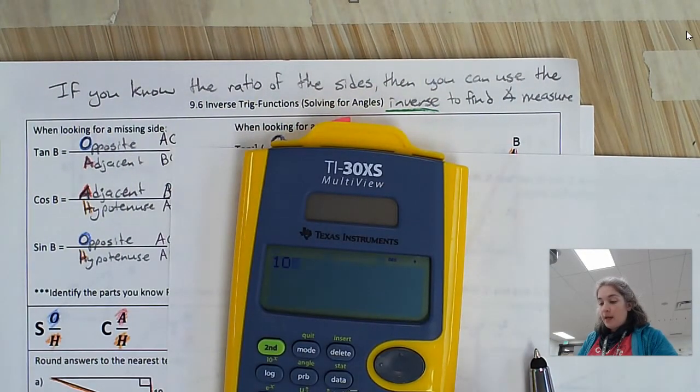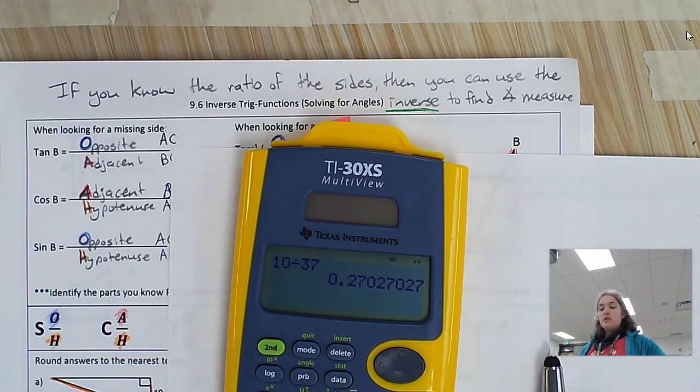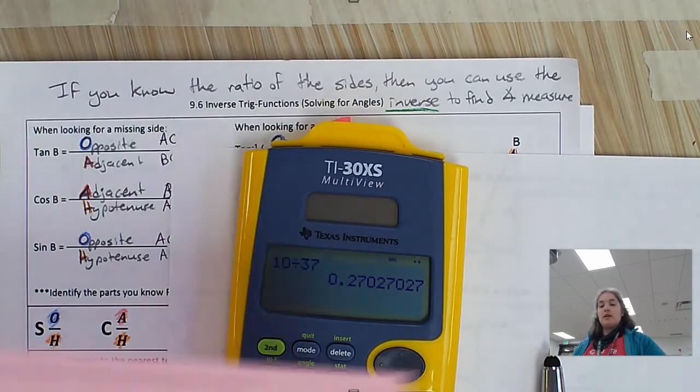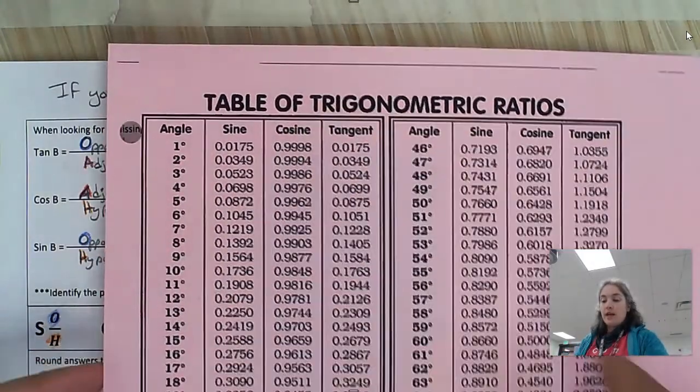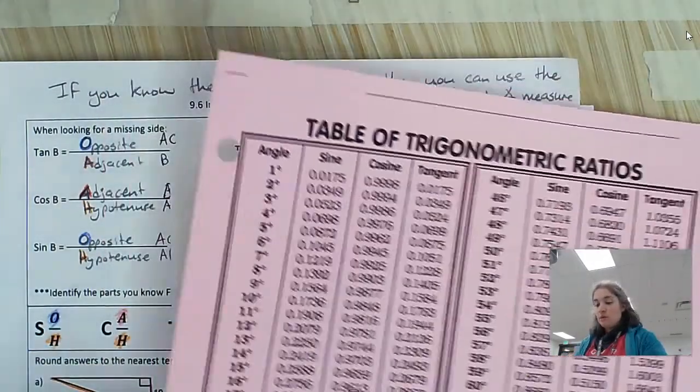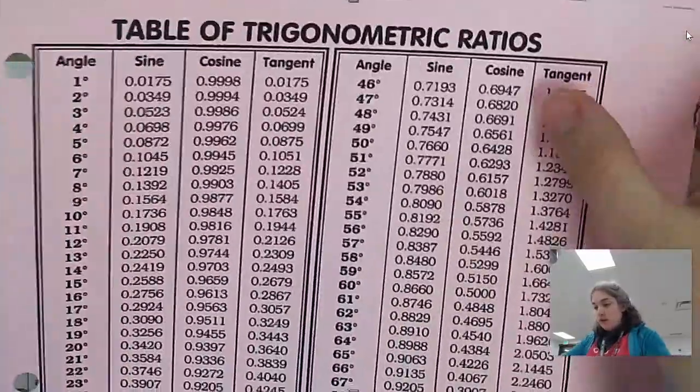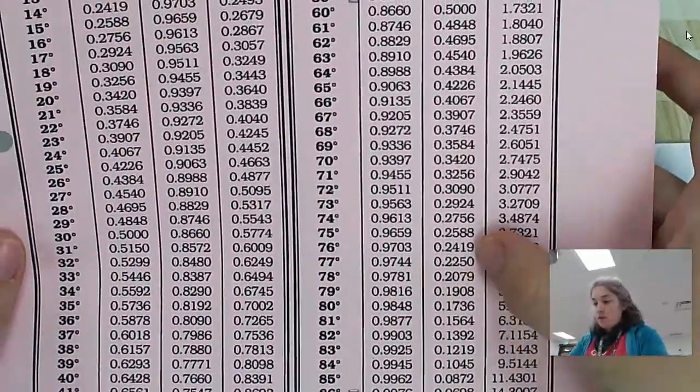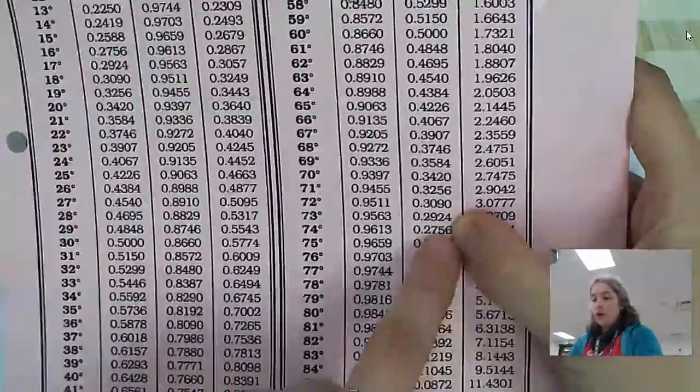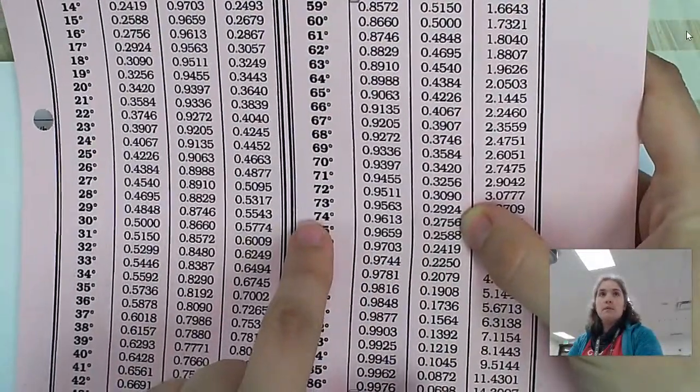Now here's the cool thing. If I type that in, 10 divided by 37, I get 0.2702. So if I look at my cosine on here, I want to find 0.27027. So that's going to be right around here. So it should be around 74 degrees.